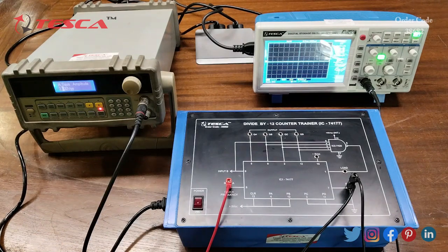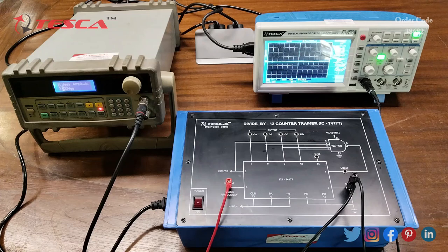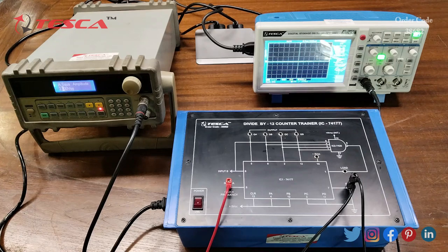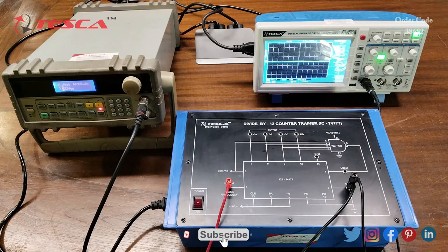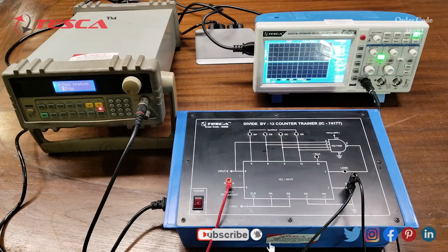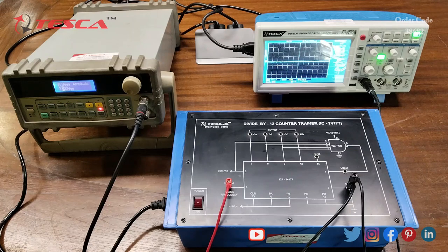At QA we are getting square wave frequency divided by 2. At QB we are getting square wave frequency divided by 4. At QC we are getting square wave frequency divided by 6. At QD we are getting square wave frequency divided by 12. At load we are getting strobe pulse frequency divided by 12.